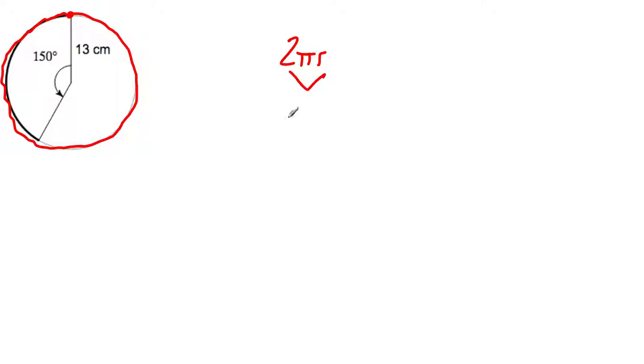Some of you may know this as π times diameter d, since 2 times the radius is diameter. I'm going to be using 2πr, though.